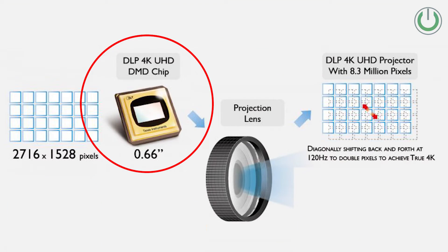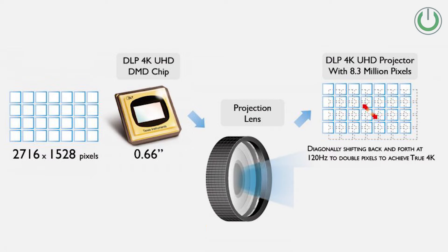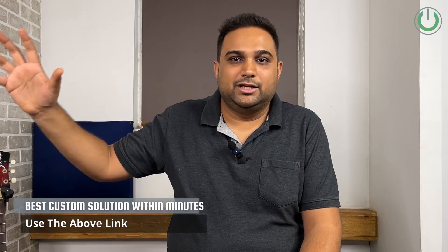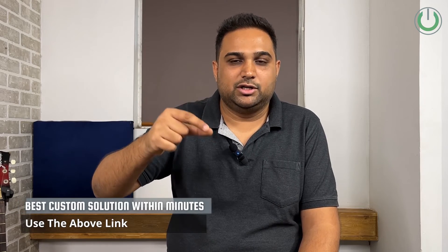That is exactly, my friends, the difference between upscale 4K and native 4K. In a native 4K projector, what you get inside is a 4K chip, and that is how — without any pixelization — it gives you a 4K resolution on the screen. And that is why native 4K projectors are a little expensive — almost double the cost of an upscale 4K projector — because these projectors invest in that 4K chip and that is why their cost goes high.